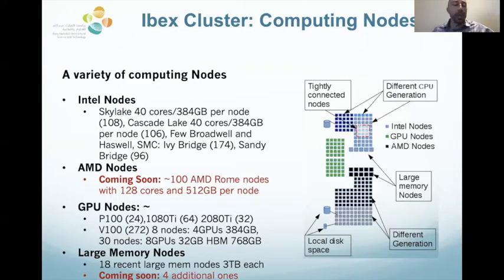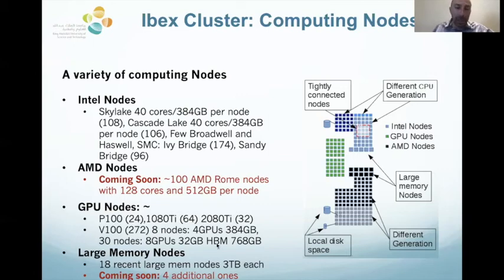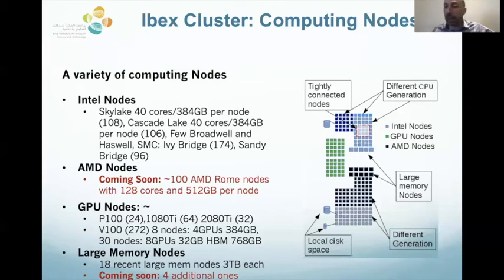The AMD Rome nodes have 128 cores each — 64 cores per socket in a dual-socket configuration — with half a terabyte of memory total. That's substantial and helps many workloads, specifically the computational biology community that requires a lot of memory. For workloads requiring even more, we have large memory nodes with up to three terabytes of memory. We have 18 of those available today, with four additional ones currently in the installation phase.